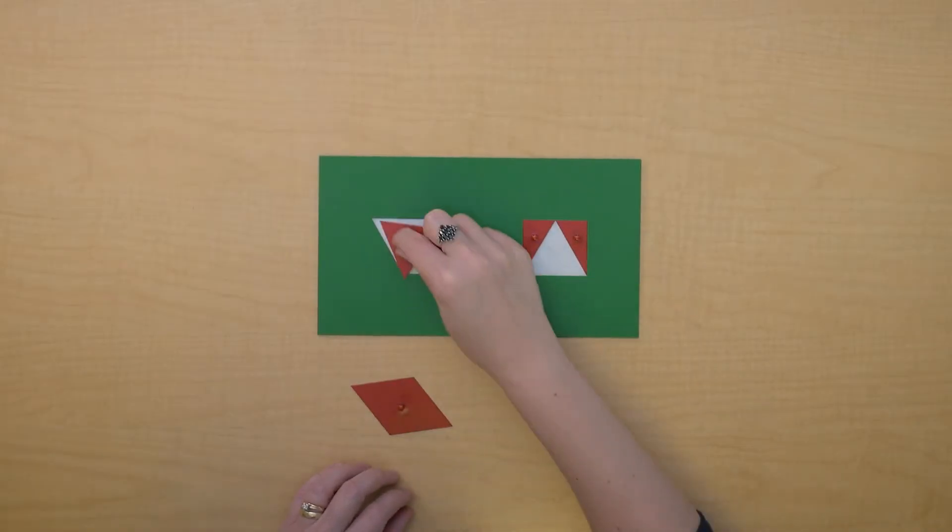So we have here a rhombus and a rectangle, and we've used these before to establish some equivalents. Remember that this rhombus is equivalent to this rectangle.